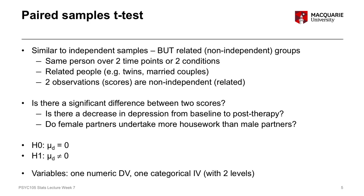The key variables for a paired samples t-test are two variables. The first is our outcome variable — our dependent variable — which is a numeric variable, a quantitative variable measured on some kind of numeric scale. The second is a categorical variable, our grouping variable or independent variable, which has two levels or two categories.